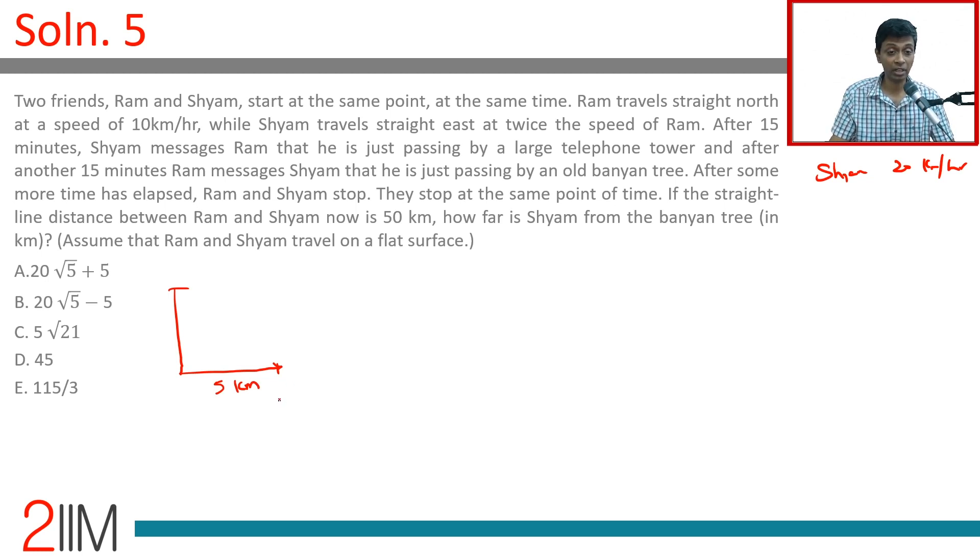After another 15 minutes, Ram passes the banyan tree. It will be again another 5 kilometers because Ram has traveled for 30 minutes, half an hour, half of 10 kilometers per hour. This is banyan tree, this is telephone tower.